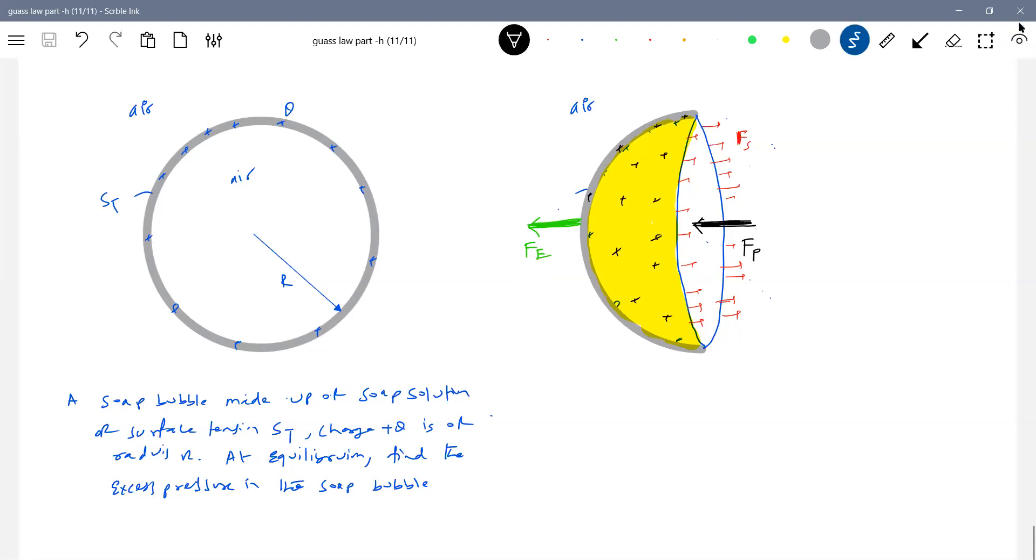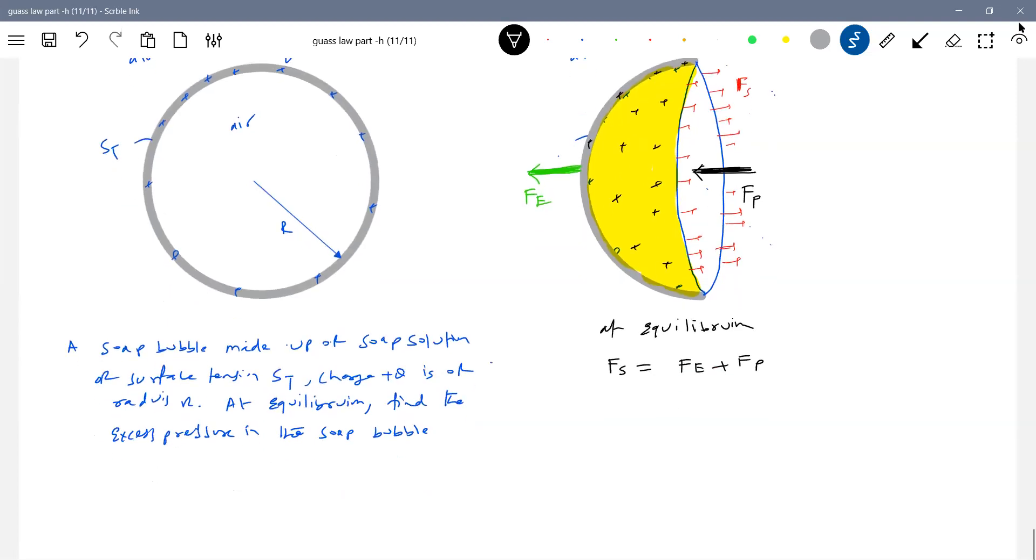Okay, let me equate these two at equilibrium. At equilibrium, the force due to surface tension should balance electrostatic force and force due to excess pressure. What is FS? Force due to surface tension.